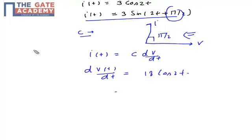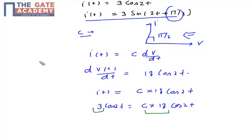So I(t) = C × dV/dt = C × 18 cos(2t). We know I(t) = 3 cos(2t). Therefore, C × 18 cos(2t) = 3 cos(2t), which gives C = 3/18 = 1/6 Farad.